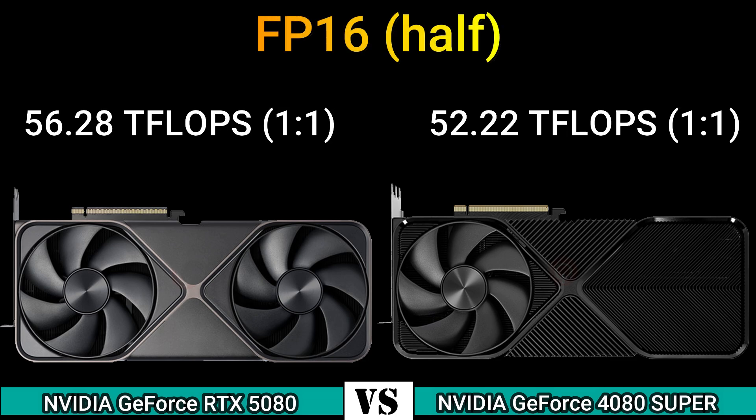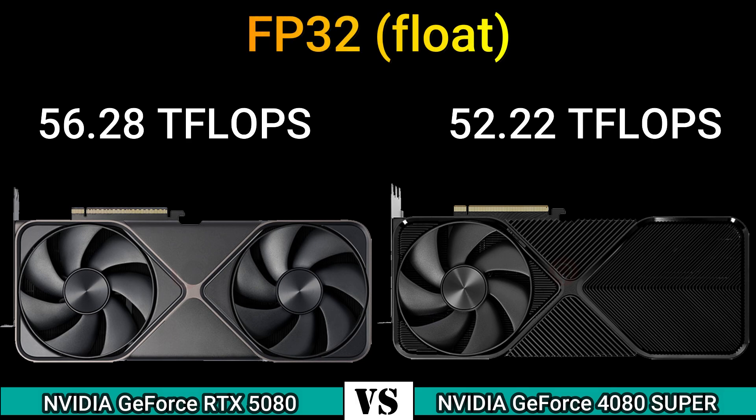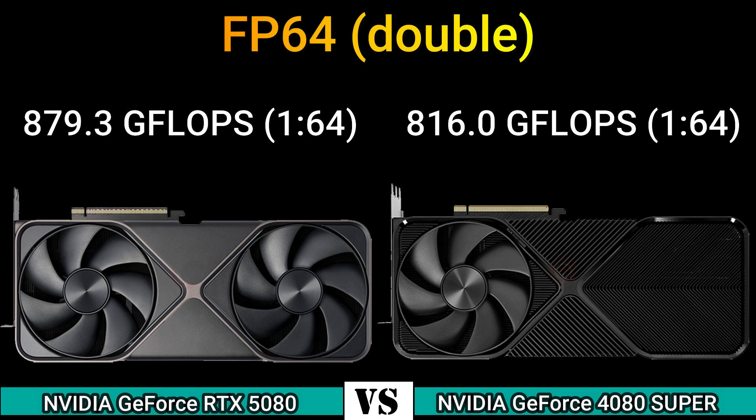FP16 half: 56.28 TFLOPS 1:1 and 52.22 TFLOPS 1:1. FP32 float: 56.28 TFLOPS and 52.22 TFLOPS. FP64 double: 879.3 GFLOPS 1:64 and 816.0 GFLOPS 1:64.